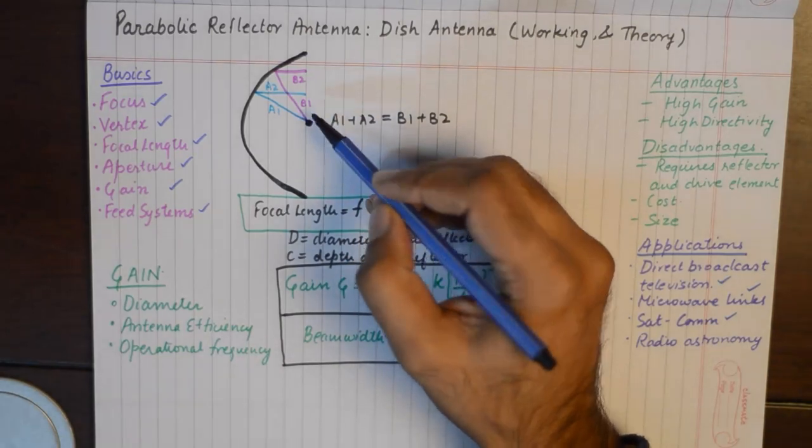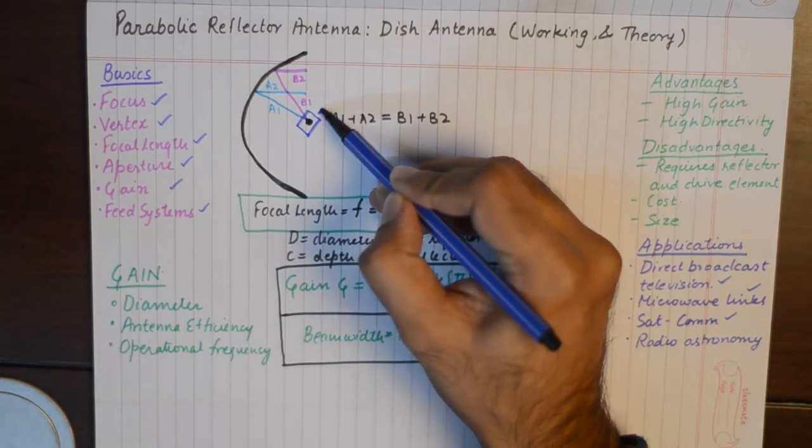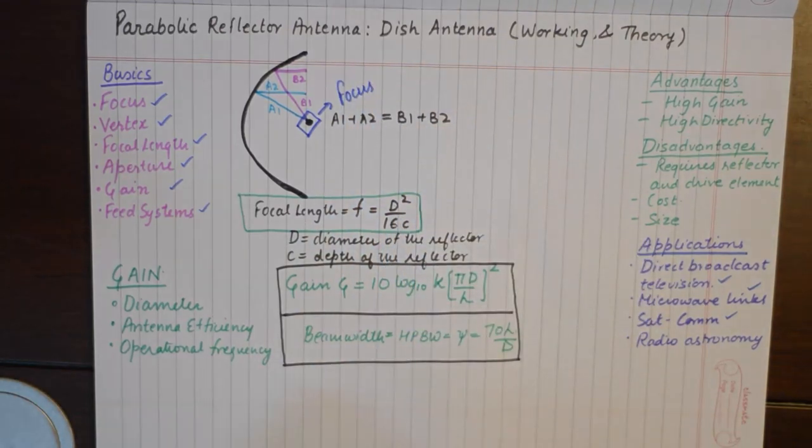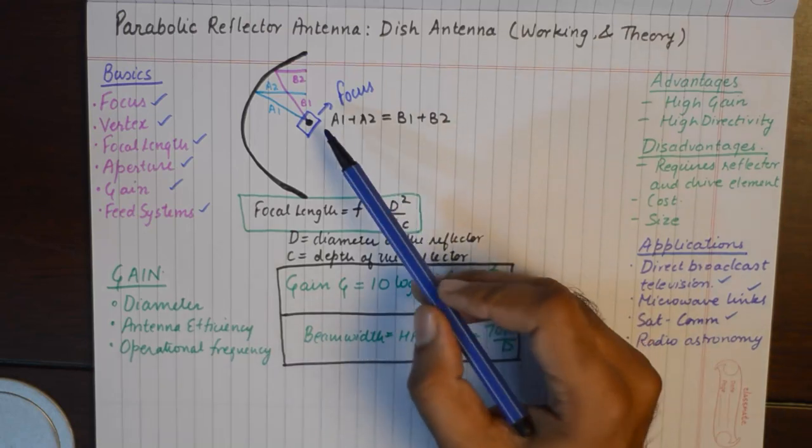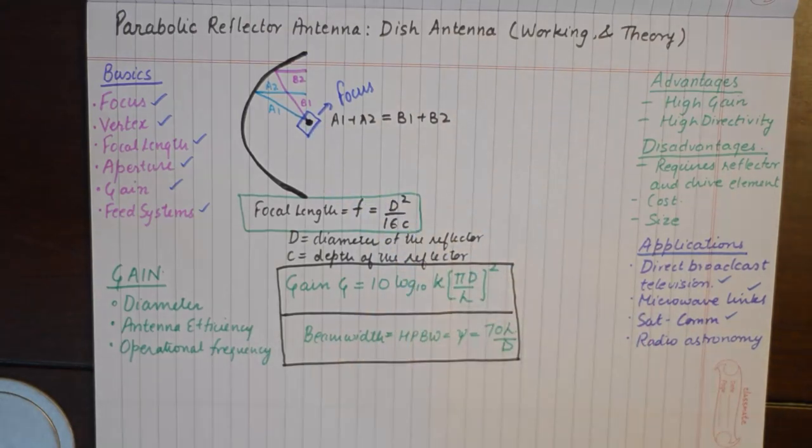The antenna which is radiating the signal lies at a special point known as focus. The first thing is that we need to place our antenna at this very special point which is known as focus.